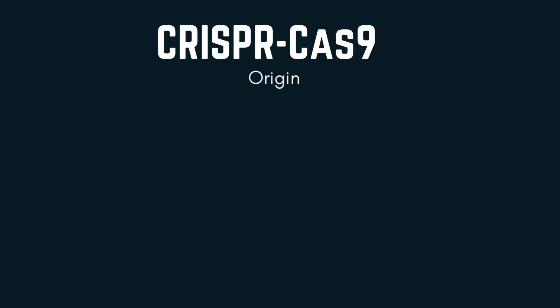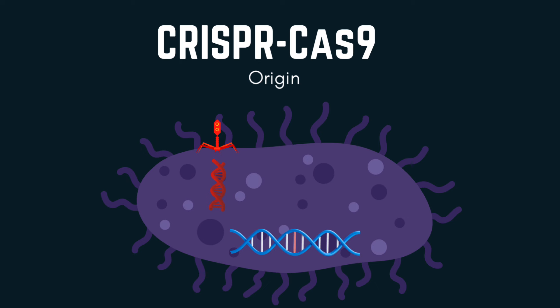Now we know the structure of CRISPR — but where did it come from? It is a defense mechanism found in some bacteria against viruses. When a virus infects a bacterium, it injects its DNA or RNA through the bacterial wall. The CRISPR system in bacteria cuts a segment of the invading DNA and integrates it into the bacteria genome at the CRISPR locus.